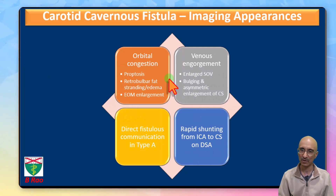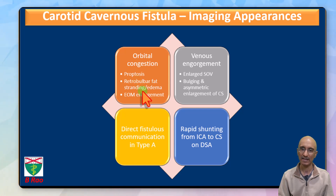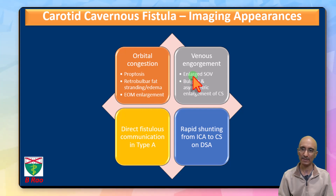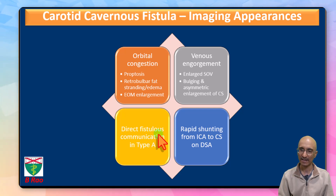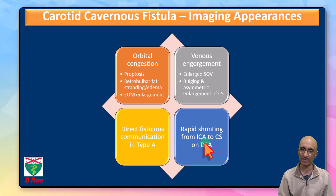In terms of imaging findings, as we saw in our patient, there was proptosis, retrobulbar fat stranding and edema, and enlargement of the extraocular muscles. There will also be enlargement of the superior ophthalmic vein, and bulging and asymmetric enlargement of the cavernous sinus. In Type A, as demonstrated in our patient, there is a direct fistula communication between the ICA and the cavernous sinus, with rapid shunting of contrast from the ICA to the cavernous sinus extending into the superior ophthalmic vein on DSA.